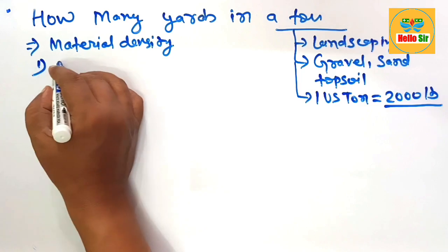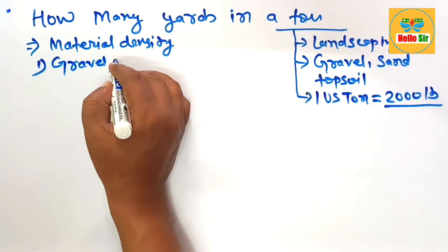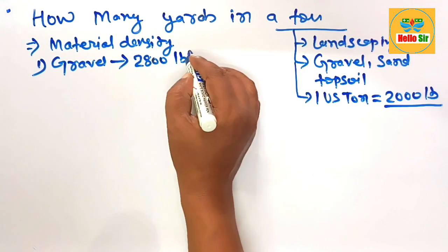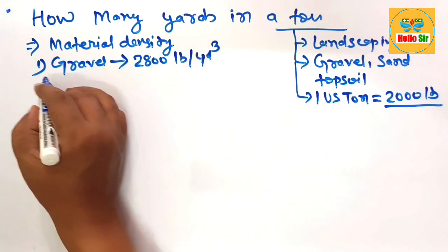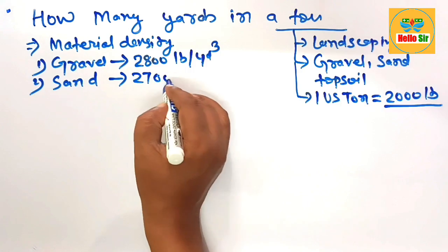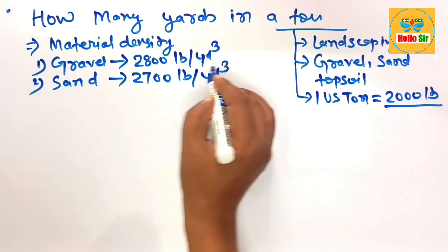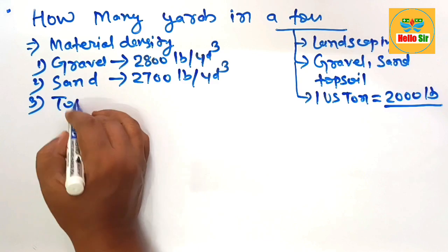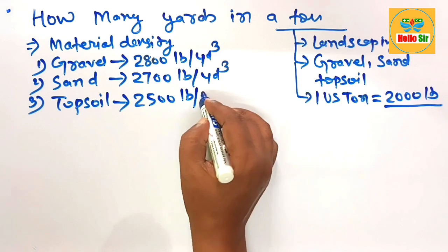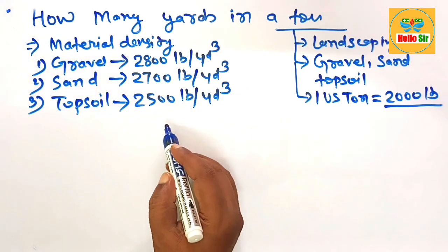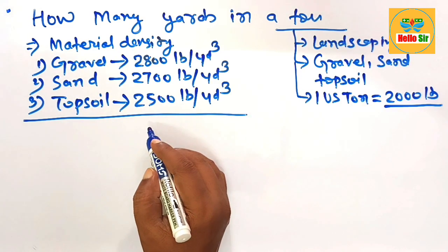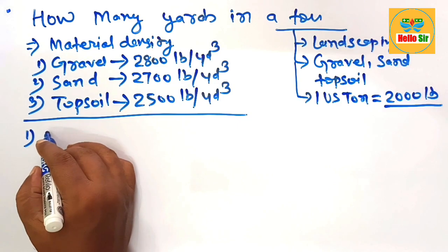The average density for gravel is about two thousand pounds per cubic yard. The average density for sand is about twenty-seven hundred pounds per cubic yard. The average density for topsoil is about twenty-five hundred pounds per cubic yard. These are the average densities for landscaping materials.